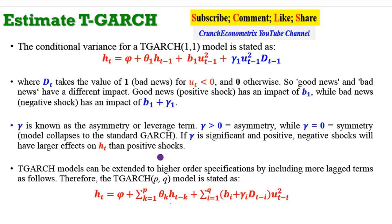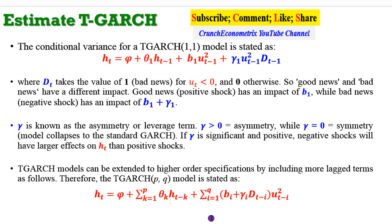A typical T-GARCH(1,1) model can also be generalized to a T-GARCH(p,q) model. This is how you construct the conditional variance specification. If you don't know how to do it, there are many examples in textbooks, and you can also adapt what you see on screen.